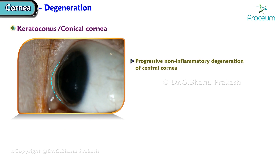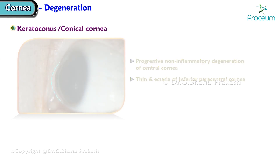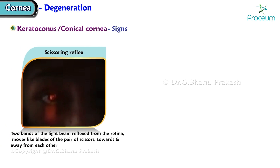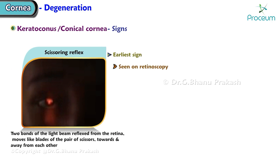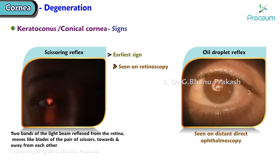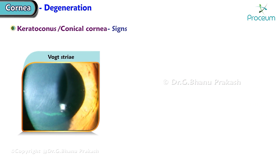Keratoconus is a conical cornea — a progressive non-inflammatory degeneration of the central cornea. The cornea is thin and ectasia of the inferior paracentral cornea is seen. Signs include the scissoring reflex, which is the earliest sign seen on retinoscopy, and the oil droplet reflex seen on distant direct ophthalmoscopy.